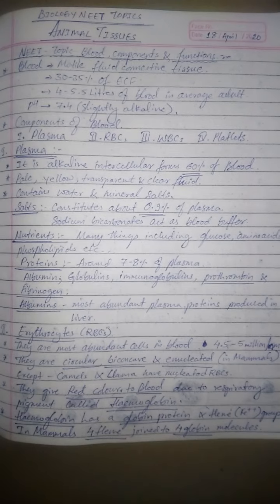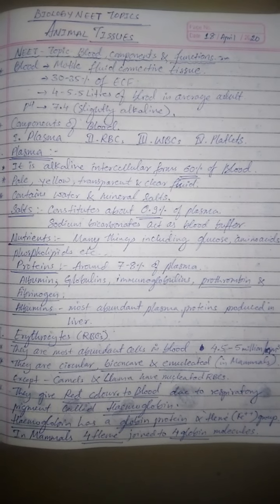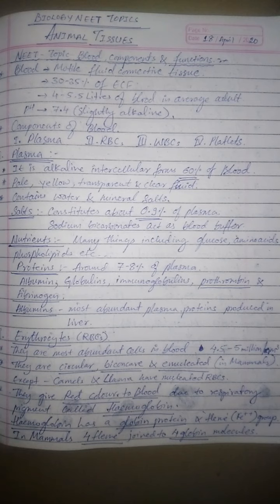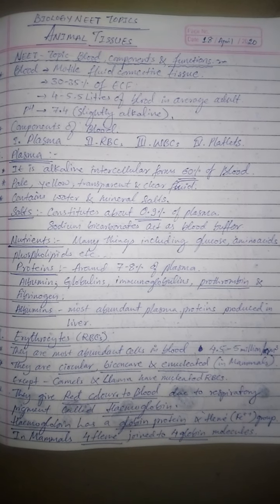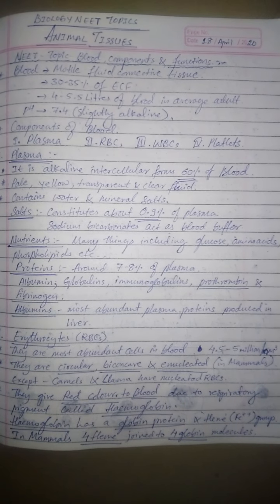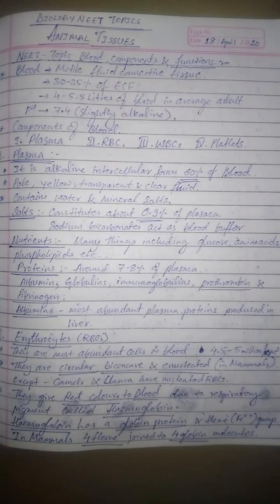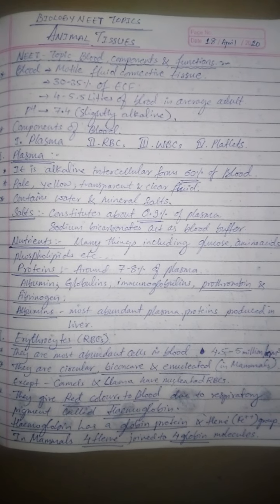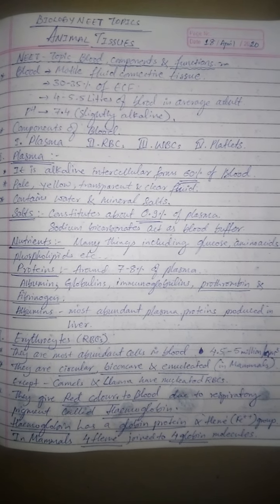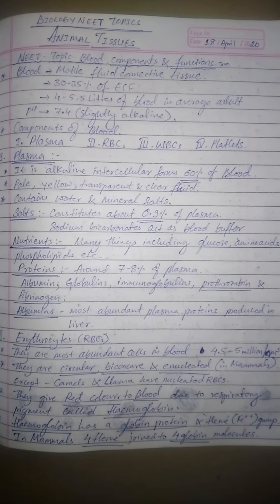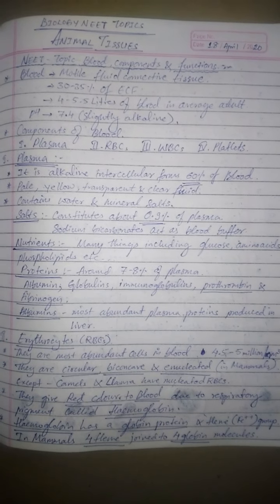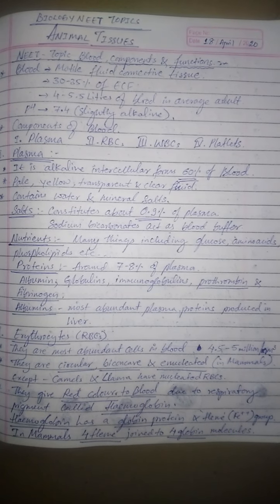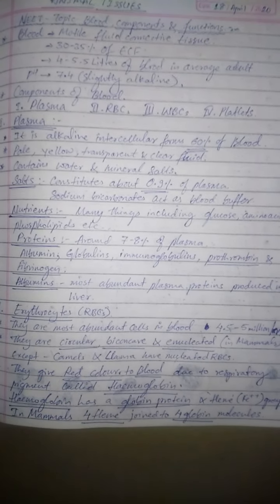RBCs are circular, biconcave, and enucleated — meaning they do not have a nucleus in mammals. There are exceptions: camels and llamas, which are biological relatives, have nucleated RBCs. RBCs give red color to the blood due to the presence of the respiratory pigment called hemoglobin.